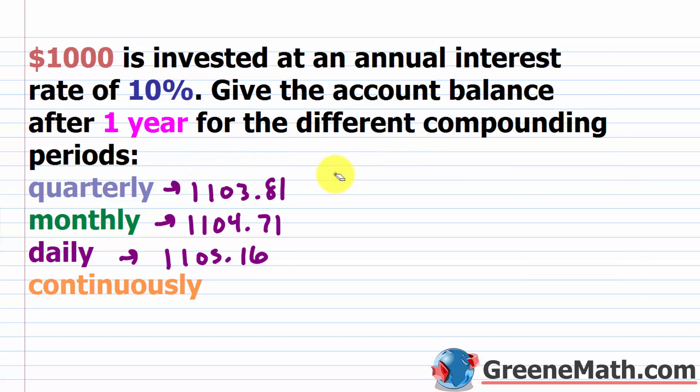And it involves our special number E. So we say A is equal to P times the special number E, remember that's about 2.718, raised to the power of R times T. So the R again is the rate as a decimal, the T is the time in years. So this is a really simple formula to use.